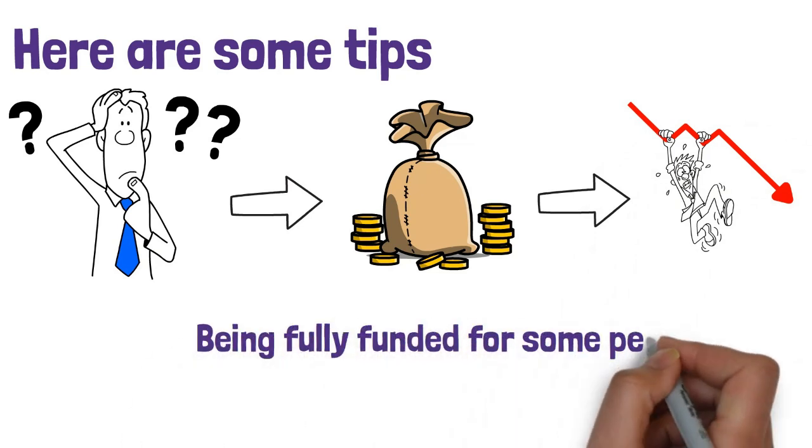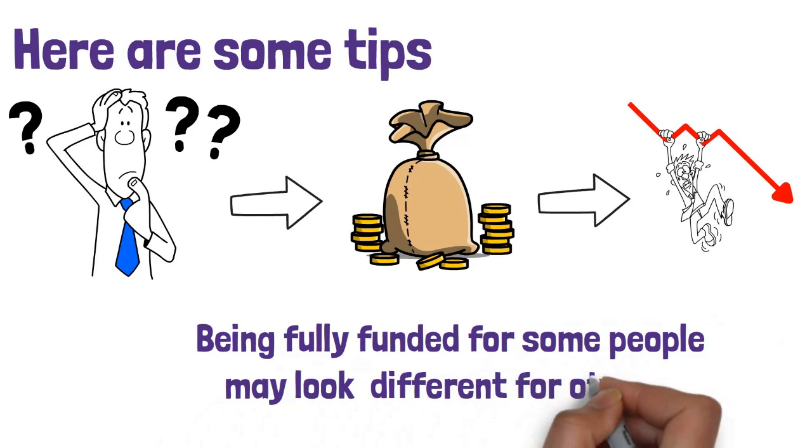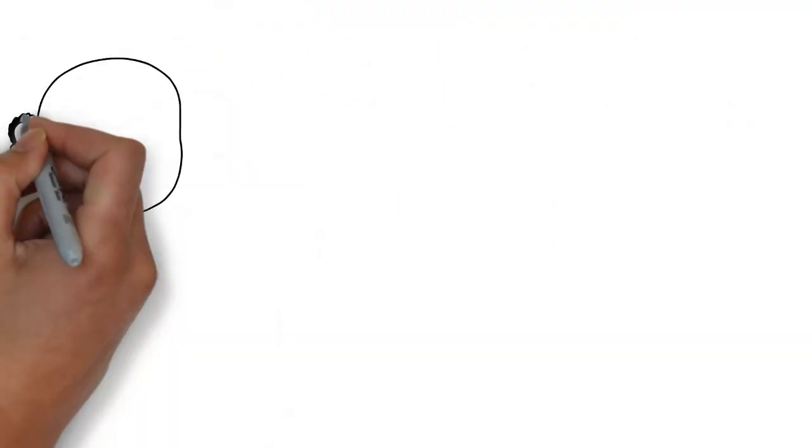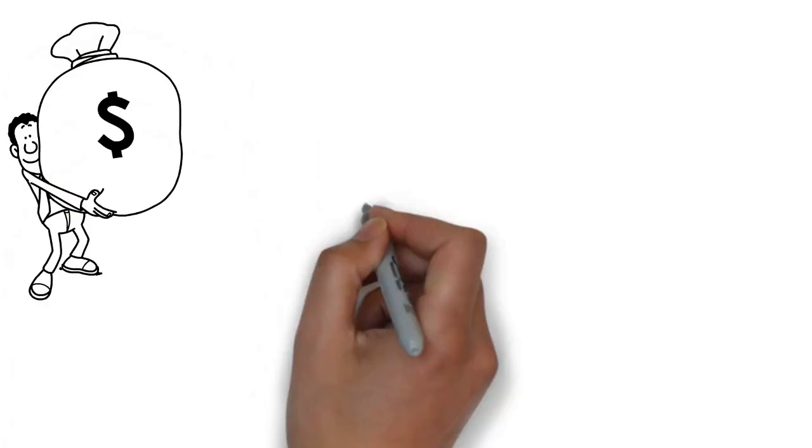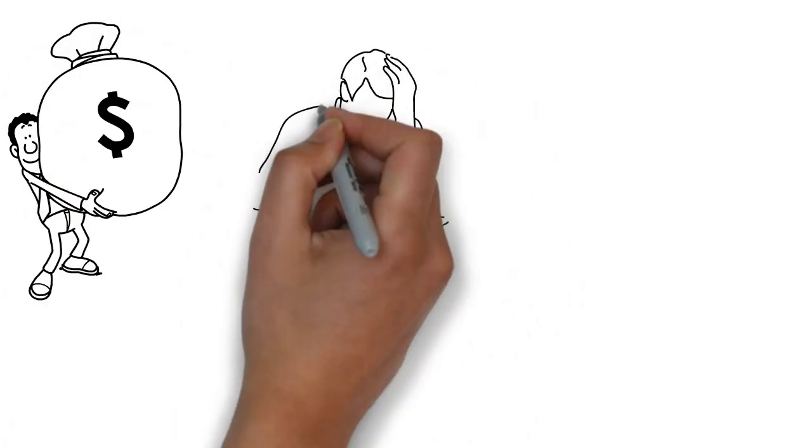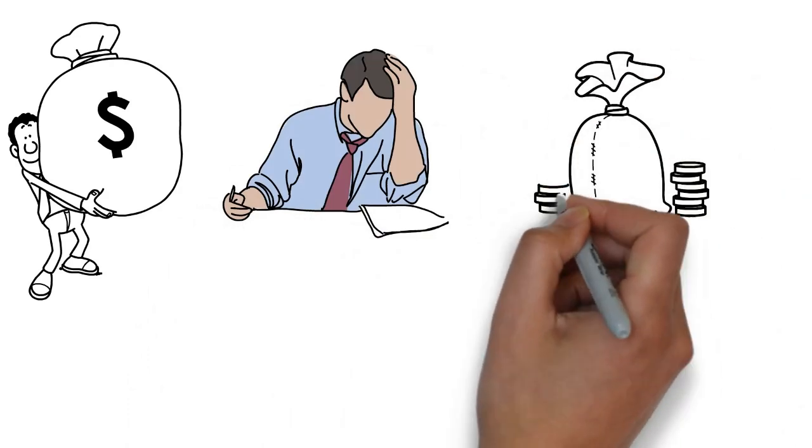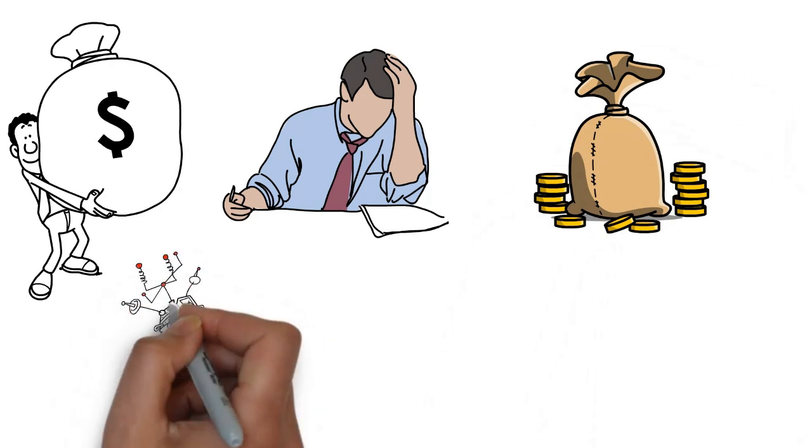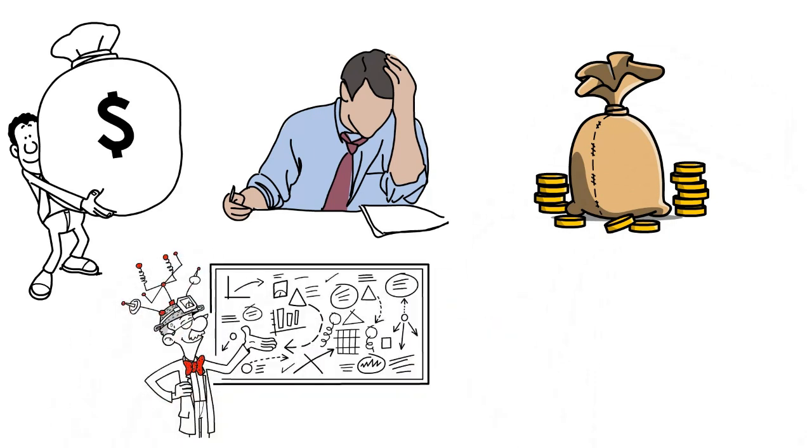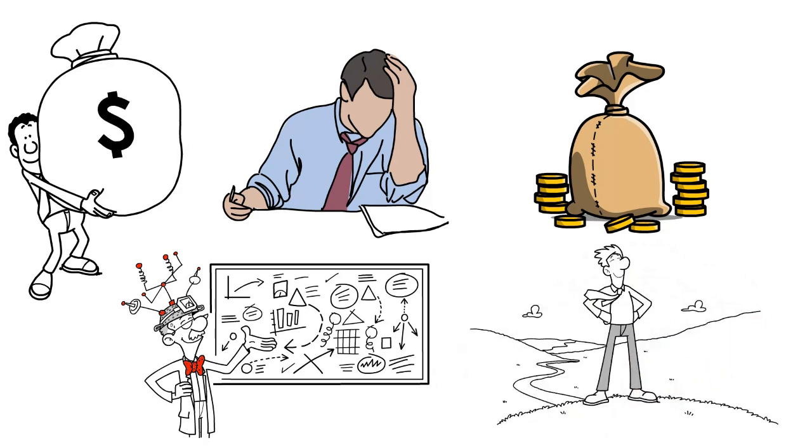Now, being fully funded for some people may look significantly different for others. Typical advice is to save around three to six months of basic living expenses, and if you experience job loss, having this money set aside will be a lifesaver. However, there is a slight wrinkle in this advice that needs to be clarified so that you are as well prepared for an upcoming recession as possible.